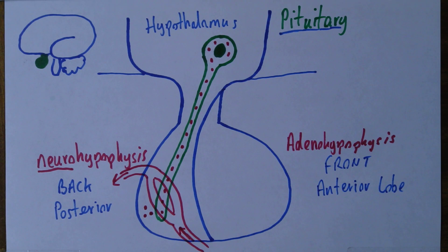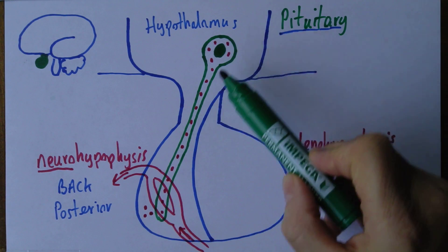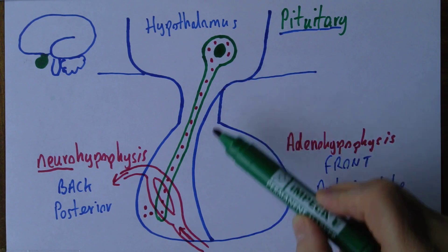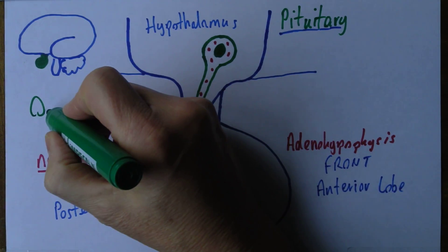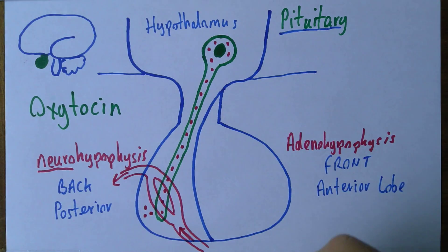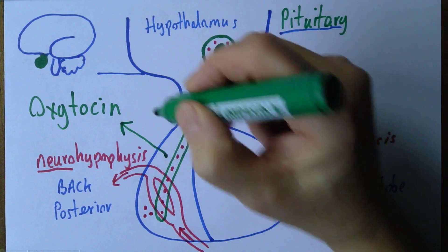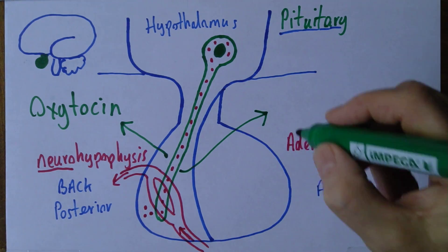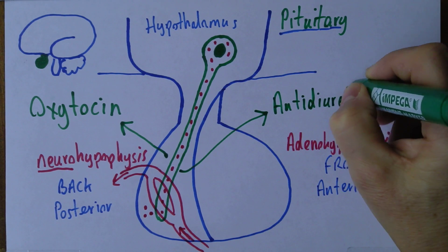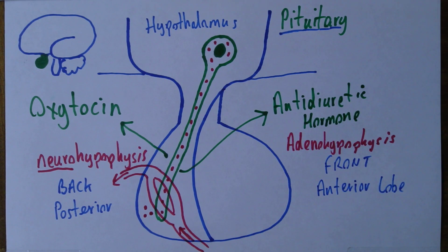There are two hormones produced by the hypothalamus, secreted via neurosecretory processes via the posterior lobe of the pituitary gland. By the way, there are about 10,000 or more of these neurons — they form a tract going down through the stalk. One of the hormones produced is oxytocin, and another one produced by the posterior lobe is the anti-diuretic hormone.